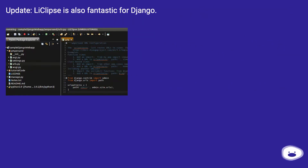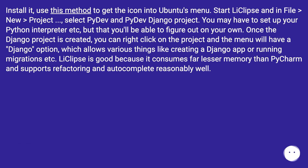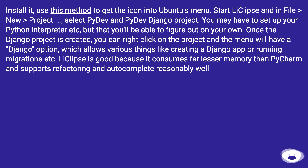Update: LiClipse is also fantastic for Django. Install it, use this method to get the icon into Ubuntu's menu. Start LiClipse and in File > New > Project, select PyDev and PyDev Django project. You may have to set up your Python interpreter, but you'll be able to figure that out on your own. Once the Django project is created, you can right-click on the project and the menu will have a Django option, which allows various things like creating a Django app or running migrations. LiClipse is good because it consumes far less memory than PyCharm and supports refactoring and autocomplete reasonably well.